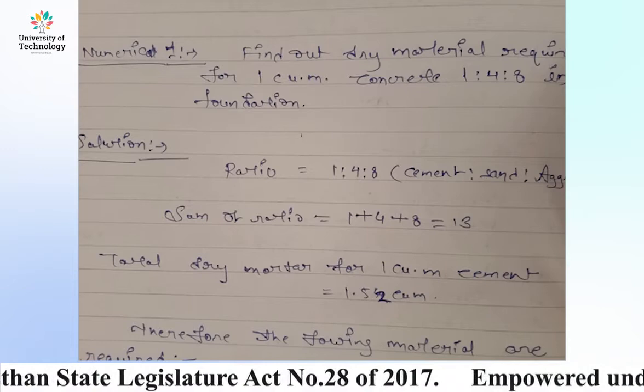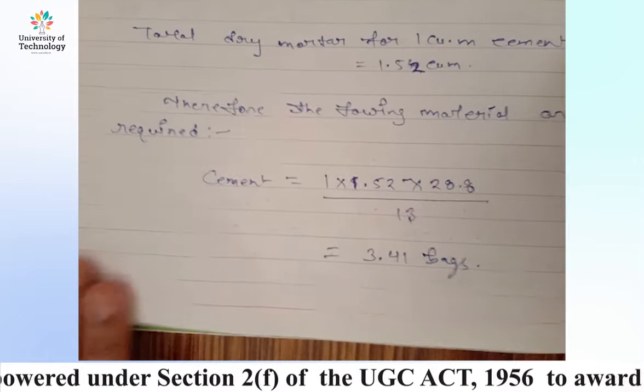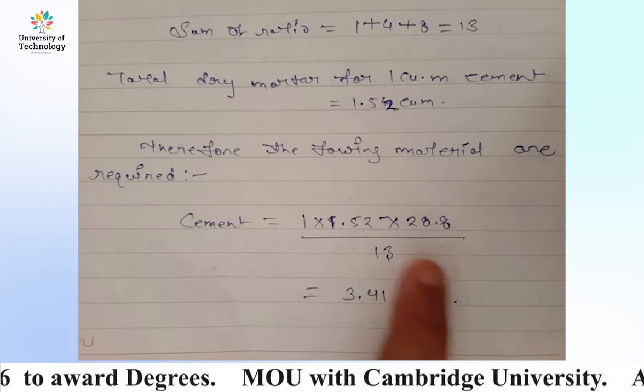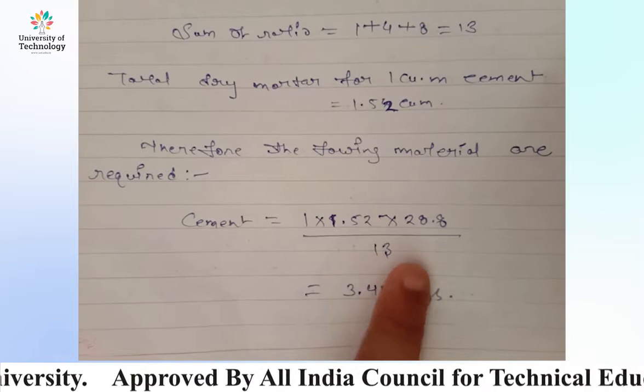We have written in the notes that in the cement case, we have to find cement. In the cement case, the weight of one bag of cement is 50 kg. We convert 50 kg into cubic meters because cement is measured and removed from bags.